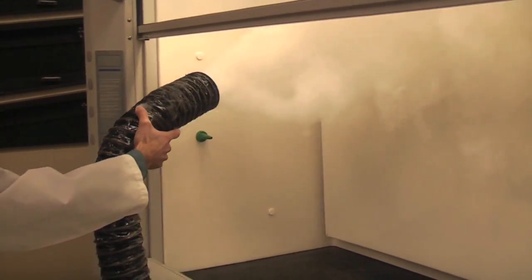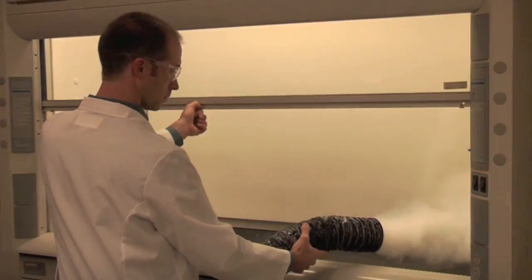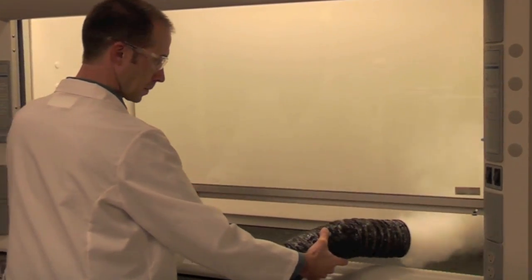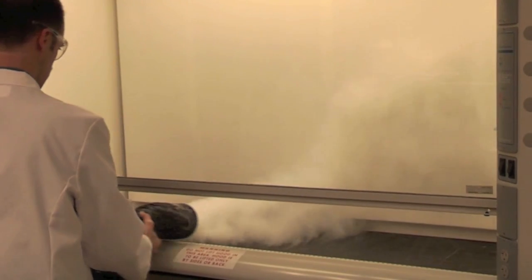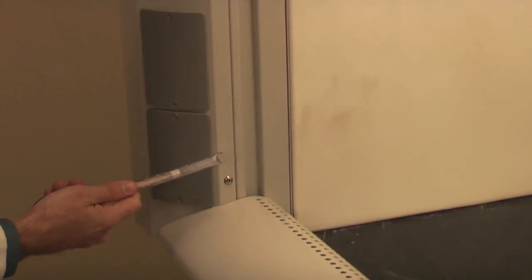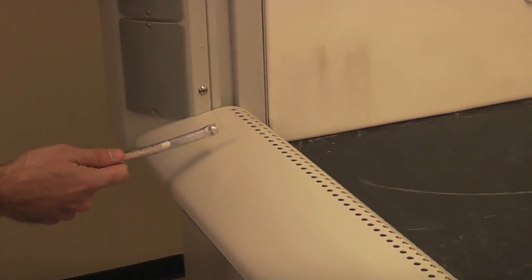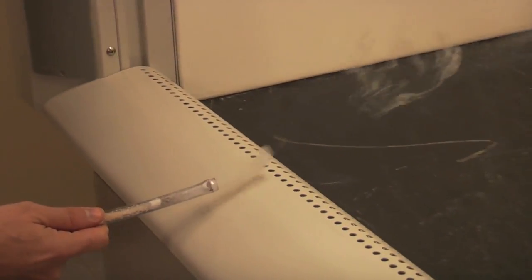The ASHRAE test is comprised of multiple parts. First, titanium tetrachloride or theatrical smoke is used to check for reverse air flow along the sash foil, as well as along the walls and work surface of the hood. Light smoke is also generated to detect more subtle air movement.